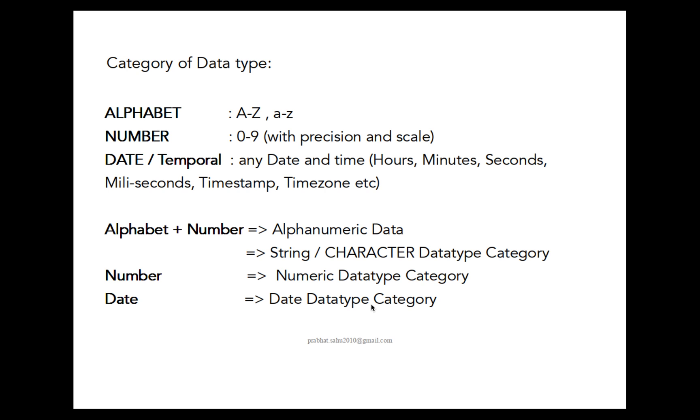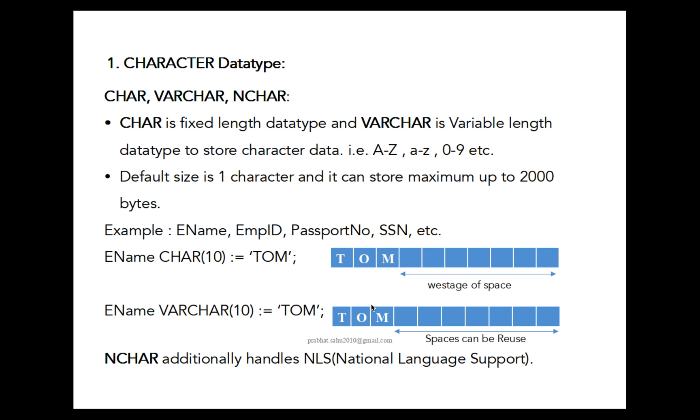First, character data type. Under character data type we will discuss CHARACTER, VARCHAR, and NCHAR. CHARACTER and NCHAR both are fixed length data types and VARCHAR is a variable length data type. All are used to store character data containing alphanumeric characters like capital A to Z, small a to z, and 0 to 9. Additionally, NCHAR means national character which additionally handles national language support.